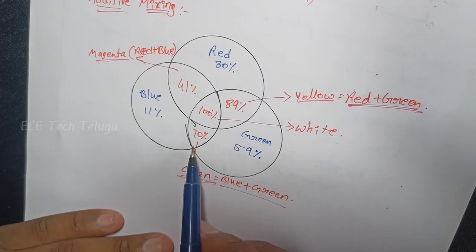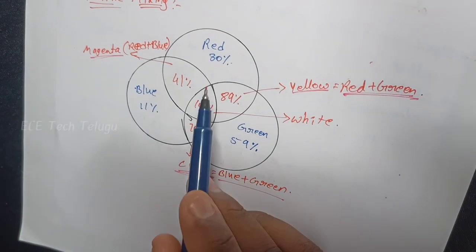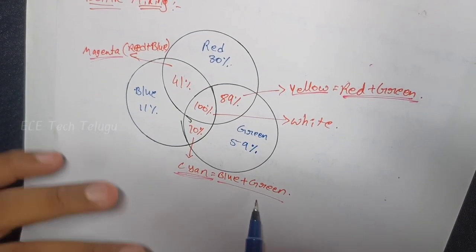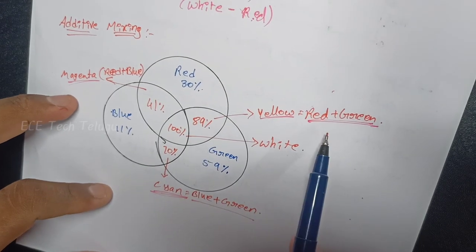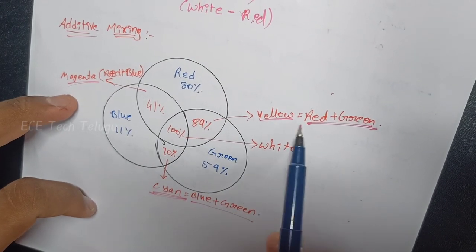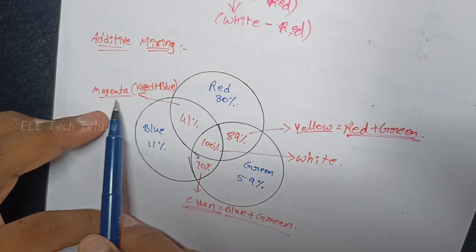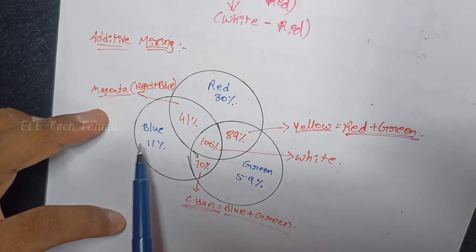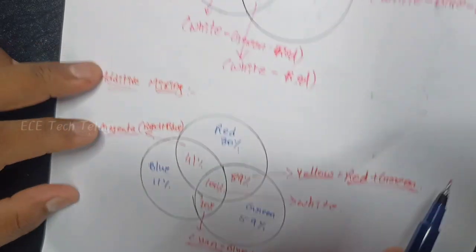For cyan: add blue plus green. For yellow: it is opposite to blue, so red plus green gives yellow. For magenta: add blue plus red.